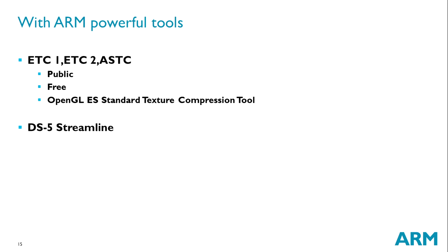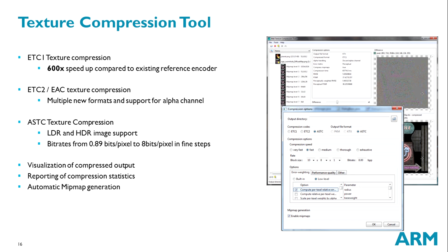The texture compression tools for ARM include ETC1, ETC2, and ASTC texture compression. It's very cool and very handy. And the DS5 Streamline fragment bound feature works great.